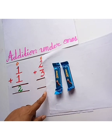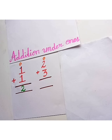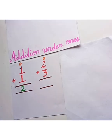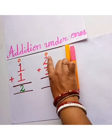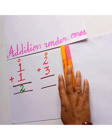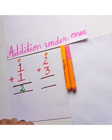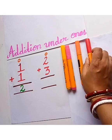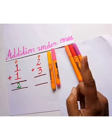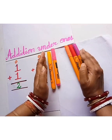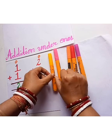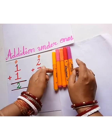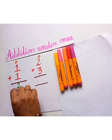Let's see another sum. Let's add 2 plus 3. These are 2 sketch pens: 1 and 2. Then let's add 3 more sketch pens: 1, 2 and 3. Addition means putting numbers together. Let's count: 1, 2, 3, 4 and 5. So we will write here 5.